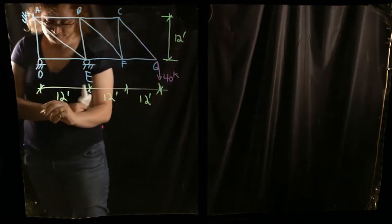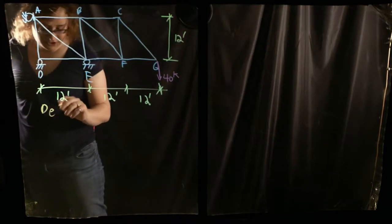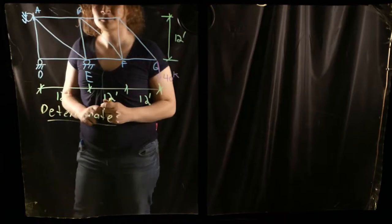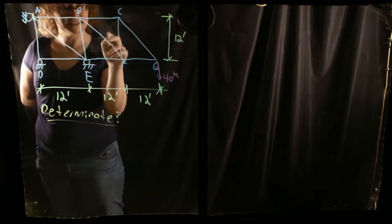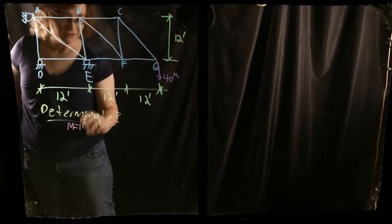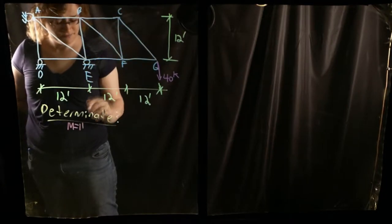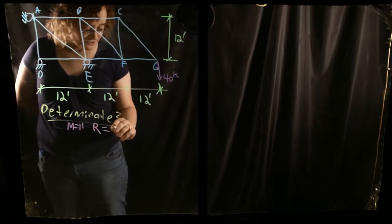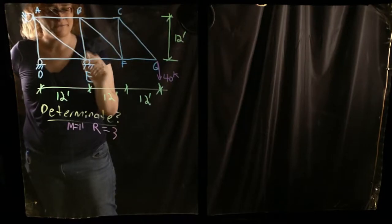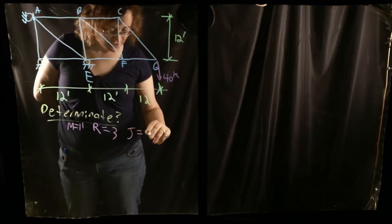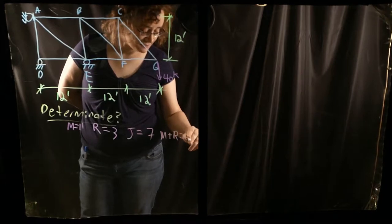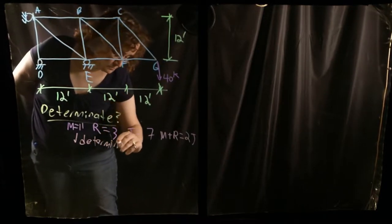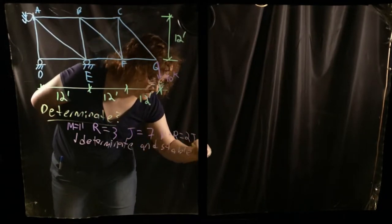The first thing is to check if this is determinant. M, the number of members, equals 11. R, the number of reaction forces — we have three supports, each carrying only one reaction force, so R equals 3. J, the number of joints, equals 7. So M plus R equals 14, which is indeed equal to 2J equals 14. This is determinant and stable.